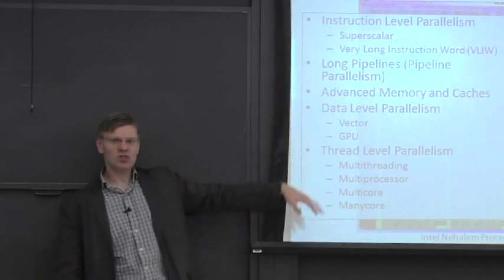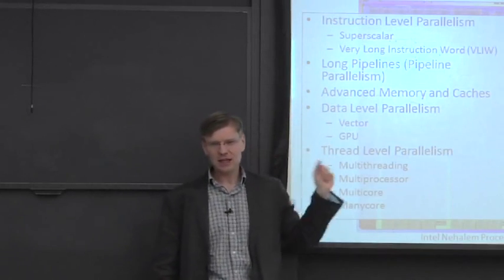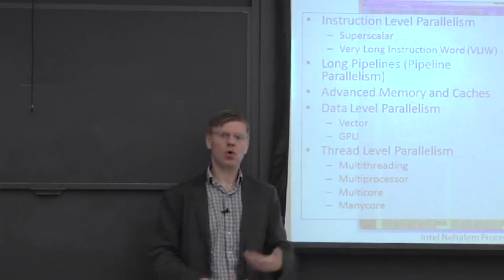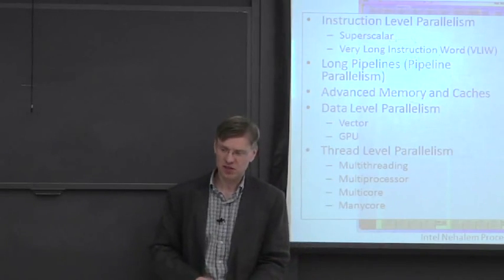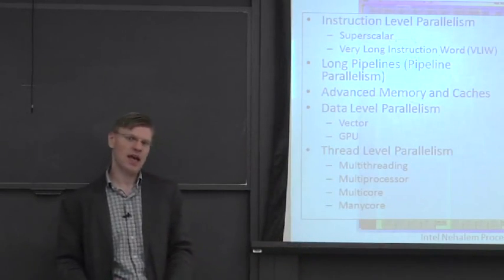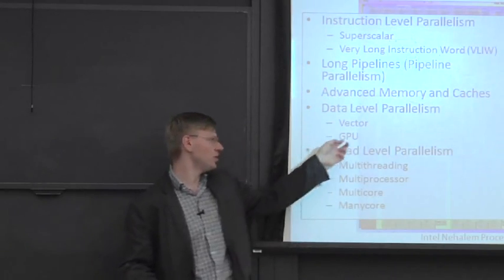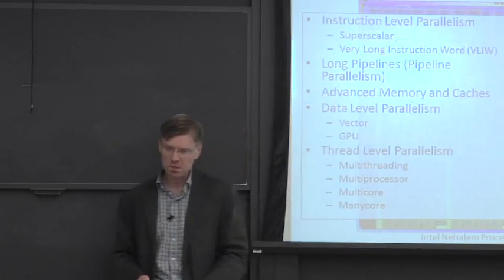Then as the term goes on, we're going to be talking about data level parallelism. So this is more explicit levels of parallelism. So these are things like vector computers and graphics processor units or general purpose graphics processor units, GPUs.